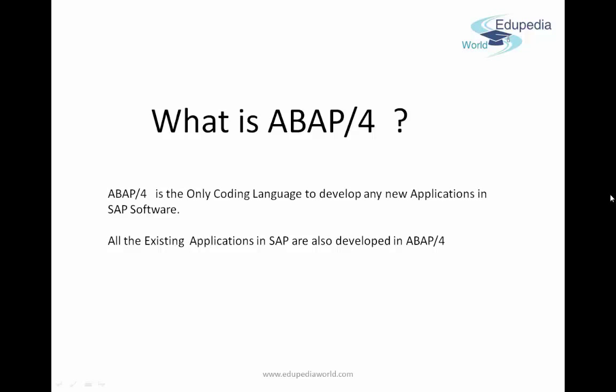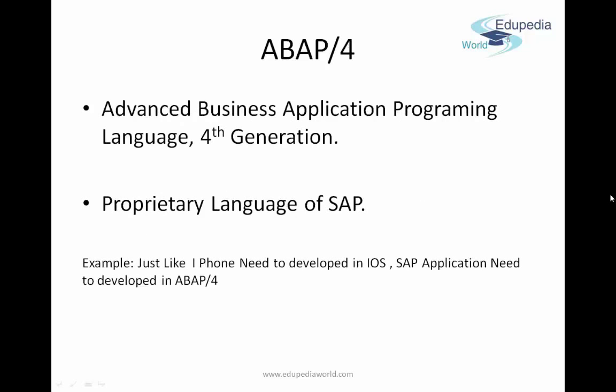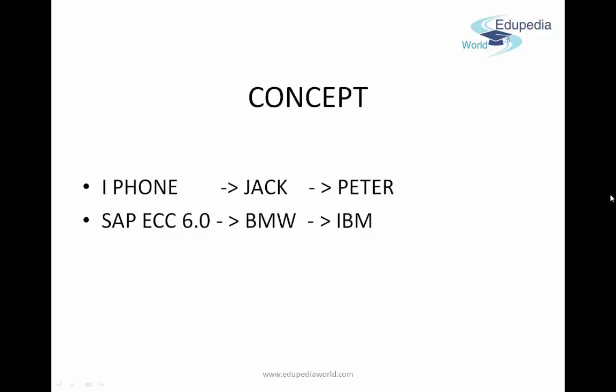ABAP/4 is the only coding language to develop new applications in SAP software. All existing applications already written in SAP are also written in ABAP/4. ABAP/4 stands for Advanced Business Application Programming — 4 stands for fourth generation language. It is a proprietary language of SAP, meaning just as iPhone apps can only be developed in iOS, any new application in SAP can only be written in ABAP/4.